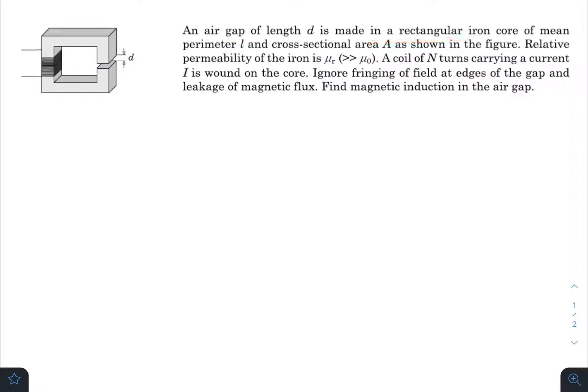The core has mean perimeter of length l and cross-sectional area capital A, as you can see in the figure. Relative permeability of the iron is mu r, which is very much greater than mu naught.